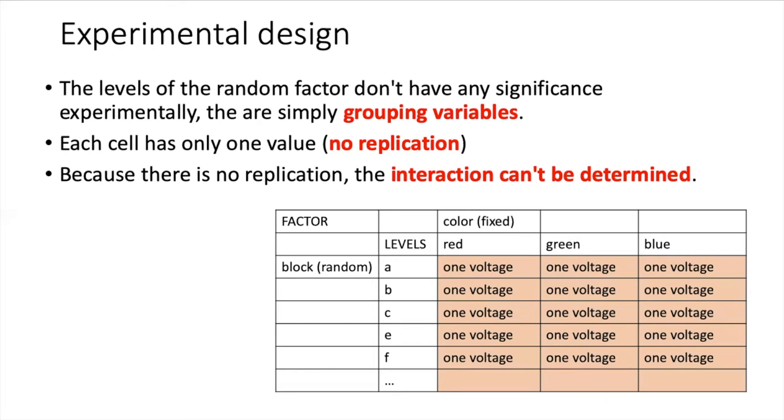It is possible in a blocked experimental design to have multiple measurements for each level of the block and for each level of the fixed effect, so we could have made, say, five measurements with red light on a particular cockroach eye. We didn't do that.